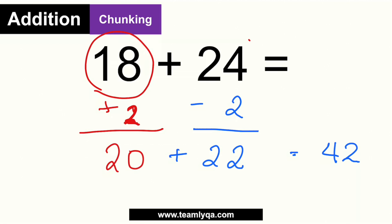The more you practice this, the faster you'll get — you won't need to rewrite anything. Just top up whichever number is closest to a round ten, take that difference from the other number, and you'll reach the final answer. It only takes 2 for 18 to become 20, take that from 24, and add them. Now it's your turn — try this problem using chunking.